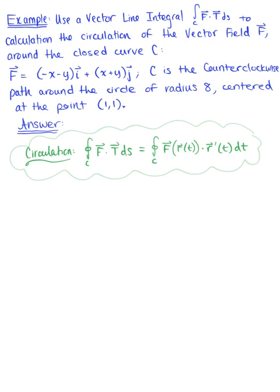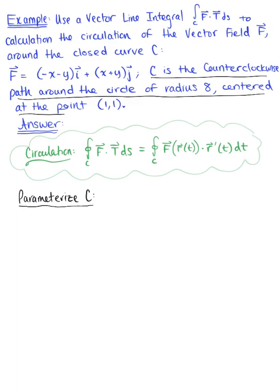The very first thing we need to do is parametrize our curve — we need a one-parameter description of the closed curve C. C is the counterclockwise path around the circle of radius 8 with center point (1, 1). In Cartesian coordinates, this gives us (x - 1)² + (y - 1)² = 64.